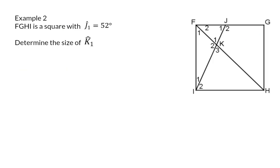Example 2. FGHI is a square with angle J1 equal to 52 degrees. Determine the size of K1. Having a look at the sketch, you will see that angle J1, the given angle, and the angle we need to determine, K1, form part of the same triangle. Therefore, we simply need to determine the size of F2 to use interior angles of a triangle.